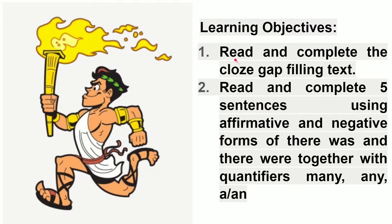The learning objectives for today's lesson are: 1. Read and complete the cloze gap-filling text. 2. Read and complete 5 sentences using affirmative and negative forms of 'there was', 'there were', together with quantifiers many, any, a, or an.